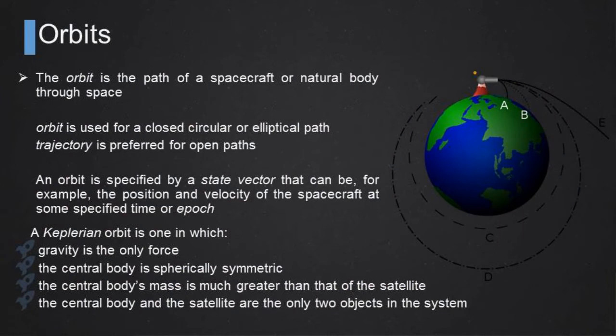What is an orbit? An orbit is a path of a spacecraft or a natural body around another object or through space. Orbit is used for a circular or elliptical path, so close trajectories, while trajectory is preferred for open paths. An orbit can be specified by a state vector, for example, a set of six quantities, position and velocity of the spacecraft at some specified time. We have three components of positions and three components of velocity.